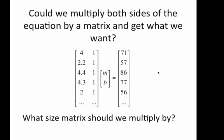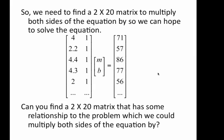Well, could we multiply both sides of the equation that we've got here, the matrix equation we've got, by a certain matrix and get what we want? Let's see, we've got a 20 by 2 for our coefficient matrix and we'd like it to be a 2 by 2. So, can we figure out what size of matrix we should multiply by? We've got a 20 by 2, we're going to multiply it by some other matrix and end up with a 2 by 2. What should that matrix be? I think you've got it figured out.